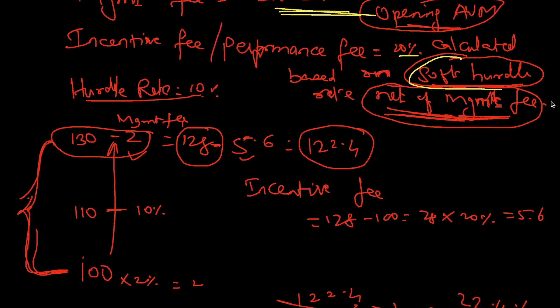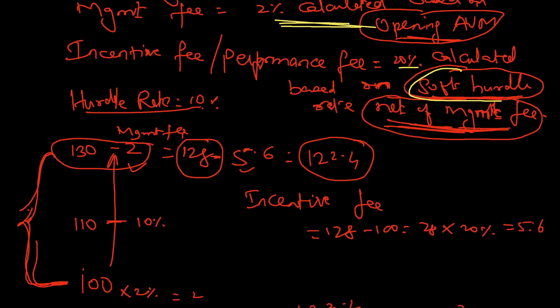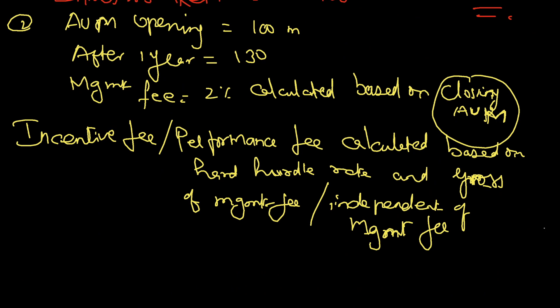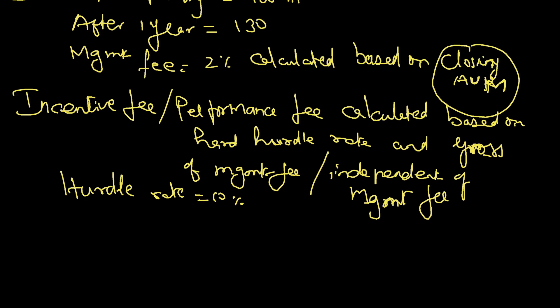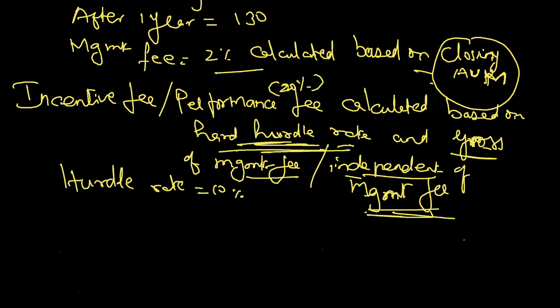Incentive fee or performance fee: 20%, calculated based on hard hurdle rate, gross of management fee — also called independent of management fee. Hurdle rate: 10%. So let's calculate: 100 has reached 130 and the hurdle rate is 10%, which comes to 110.